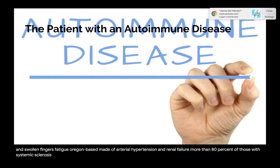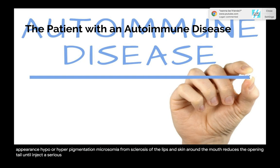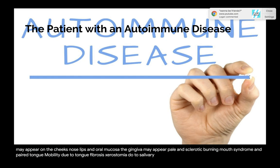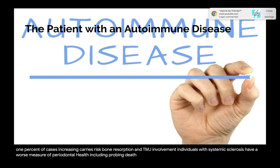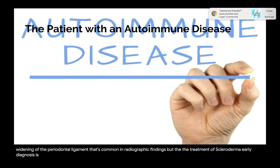More than 80% of those with systemic sclerosis experience oral-facial manifestations, which may include: fibrosis of the facial skin resulting in a mask-like appearance; hypo- or hyperpigmentation; microstomia from sclerosis of the lips and skin around the mouth; telangiectasias appearing as small red macular areas on cheeks, nose, lips, and oral mucosa; pale and sclerotic gingiva; burning mouth syndrome; impaired tongue mobility due to tongue fibrosis; xerostomia due to salivary gland involvement in 25–71% of cases, increasing caries risk; bone resorption and TMJ involvement; wider periodontal ligament on radiographs; and trigeminal neuropathy.